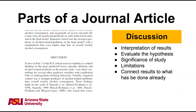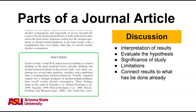The discussion section of a journal article is where researchers will interpret the results that were discussed previously. This section is where researchers will talk about what their findings mean, whether their hypothesis is supported or not, the significance of their study, and any limitations within their study. Researchers will also connect the study's current results to past literature.